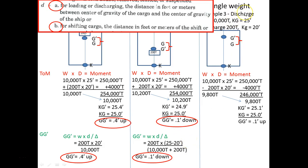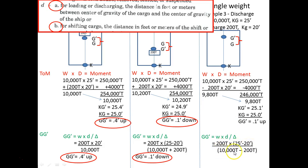Let's do the discharge formula. The formula is the same — for discharging, the distance is between the center of gravity of the cargo and the center of gravity of the ship. So: 200 times (25 minus 20) divided by 9,800. When we loaded we added 200; now we're subtracting 200. So it's going to be 0.1 again — but this time, we know it went up.